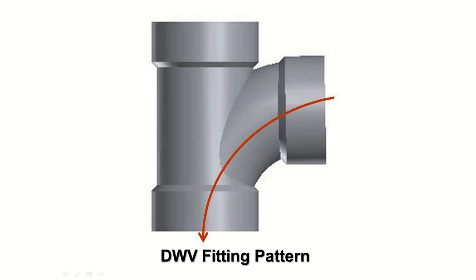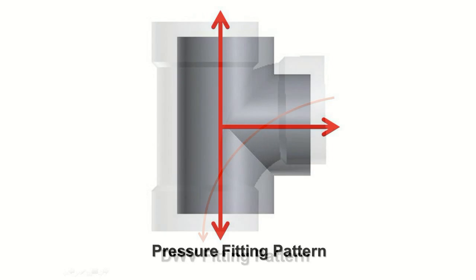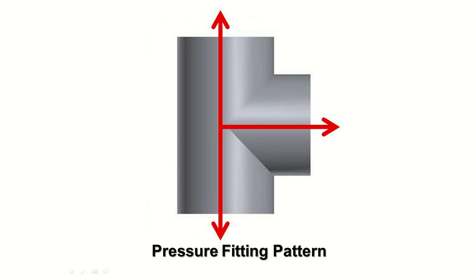Remember, DWV fittings rely on gravity and the flow pattern to move the effluents downstream. Pressure fittings can only be used in conjunction with pressurized pipe. If these types of fittings are inadvertently used with a non-pressure system, clogs may occur because there is no flow sweep in the pattern.